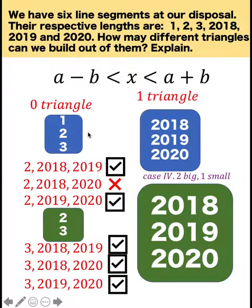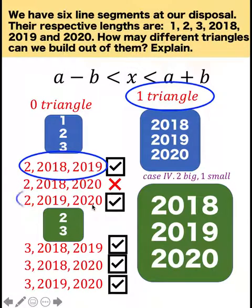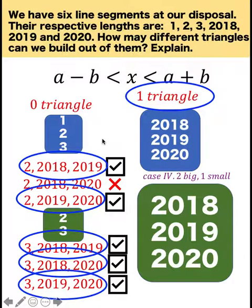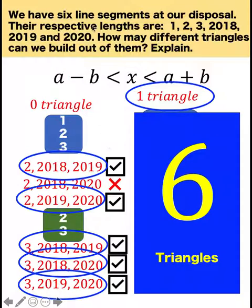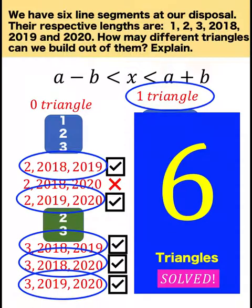Considering all four cases, how many triangles do we have in total? We have one from the long sides group, two from pairing 2 with large sides, and three from pairing 3 with large sides — a total of six triangles that can be formed using these six side lengths. This problem is now solved. Thank you very much and we hope to see you again in our next video. Bye for now.